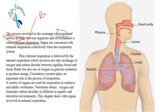Any organ system is made up of a combination of organs. In the respiratory system, the organs involved are: nasal cavity, pharynx, larynx, trachea, lungs, bronchi, bronchioles, and at the end, alveoli. All these organs together form the respiratory organ system.